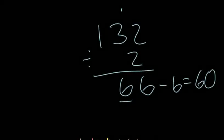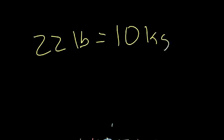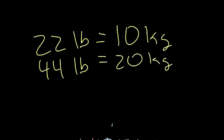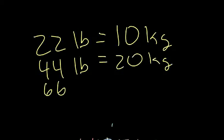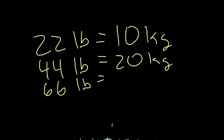Now for those of you that are a little bit quicker, you might have figured out that every 22 pounds is equal to 10 kilograms. So 22 pounds equals 10 kilograms. If I added 22 to that, I would get 44 pounds, and that would equal 20 kilograms. Add 22 to that, you get 66 pounds, and that's equal to 30 kilograms, and so on and so forth.